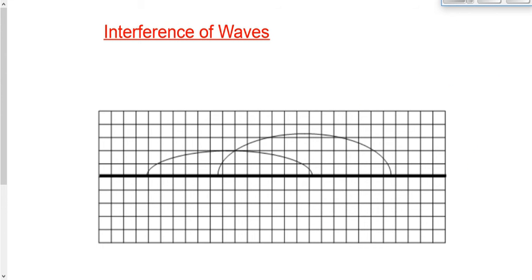Today we're covering new material, starting with interference of waves — what happens when a wave encounters another wave. You saw the demonstration showing constructive and destructive interference. Here we have two crests. What kind of interference do you think we'll get? We're going to get constructive interference, because we have two crests.